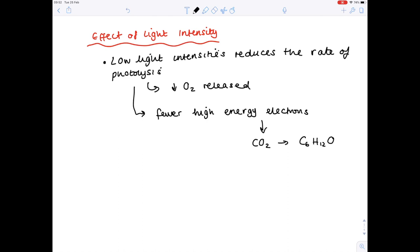So if we don't have the high energy electrons, we're not really carrying out the process of photosynthesis, so you get less production of carbohydrates such as glucose. Now notice that early morning, light intensity may be the limiting factor because it will be quite dark.